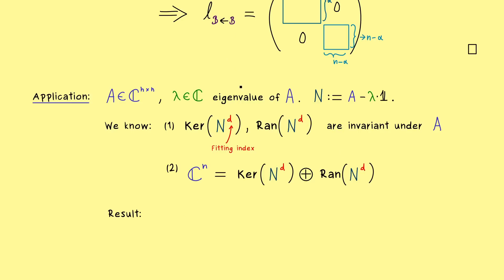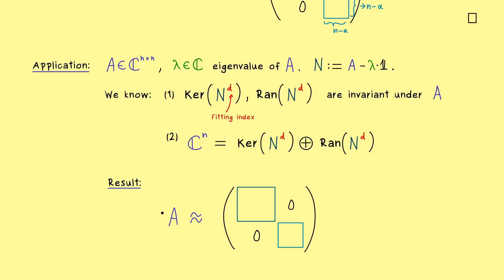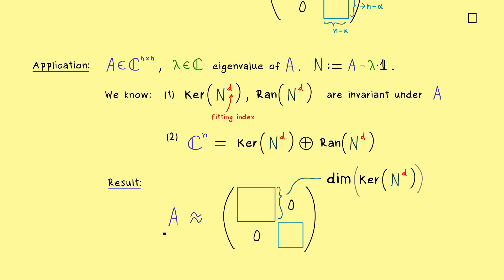Our proposition from above is therefore applicable, and we get the following result: the matrix A is similar to a 2×2 block diagonal matrix. The first block has size equal to the dimension of the kernel — the generalized eigenspace — and the other block corresponds to the range of N^d. Moreover, the characteristic polynomials of A and this block diagonal matrix are the same. This fact is what we will use in the next video.